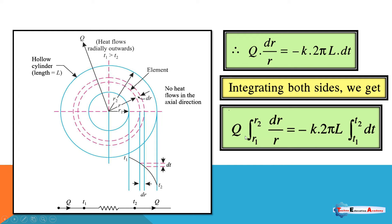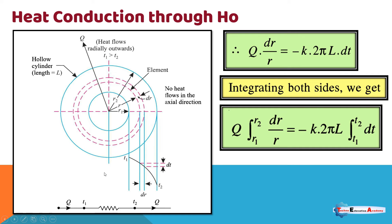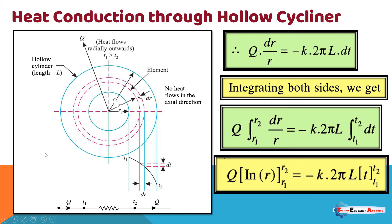So q remains as is. The integration of 1/r·dr with limit r1 to r2. Since thermal conductivity k is uniform throughout the heat transfer, it is constant and kept outside the integration. The integration of dt has the temperature limit t1 to t2. This is our boundary condition — temperature t1 to t2 and radius r1 to r2.